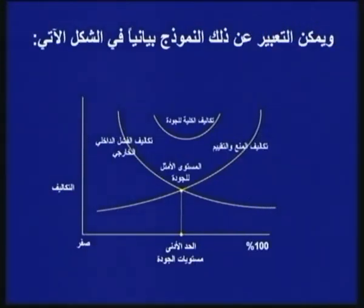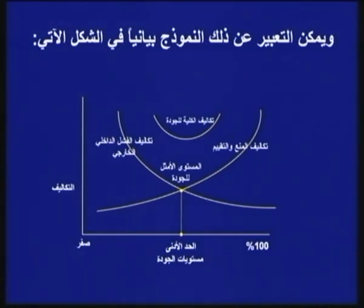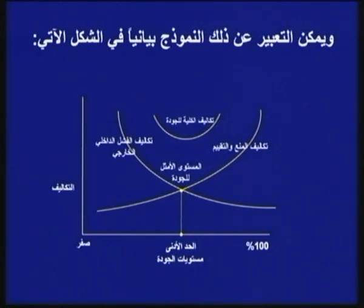نُعبّر عن هذا النموذج بيانياً: العمود الرأسي يمثل التكاليف، والعمود الأفقي يمثل مستويات الجودة التي تتراوح من صفر إلى مئة بالمئة. تكاليف المنع والتقييم تتزايد مع ازدياد مستويات الجودة، أما تكاليف الفشل الداخلي والخارجي فتتناقص مع ازدياد مستويات الجودة.